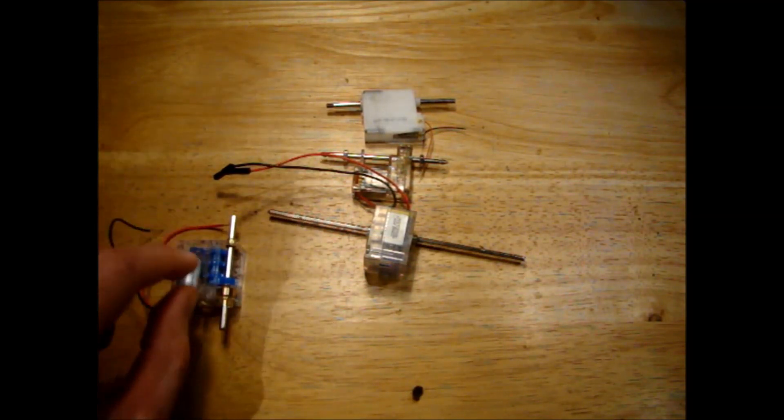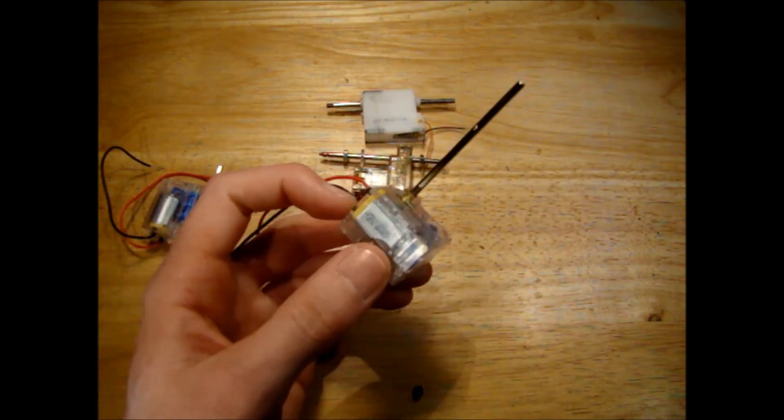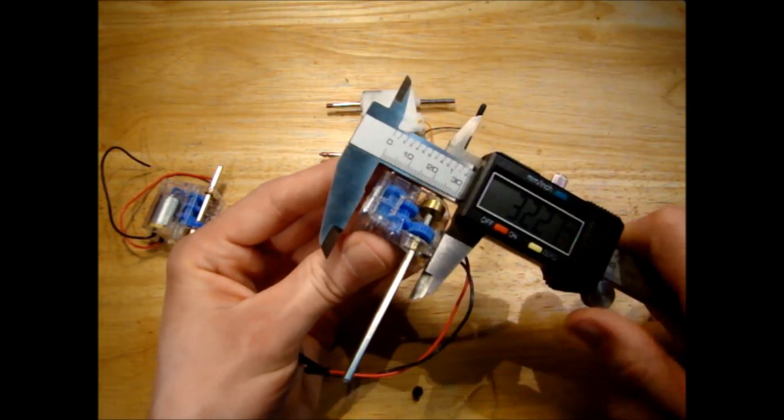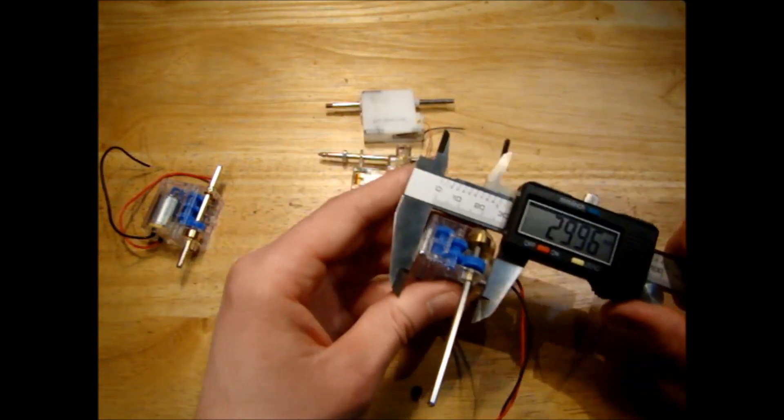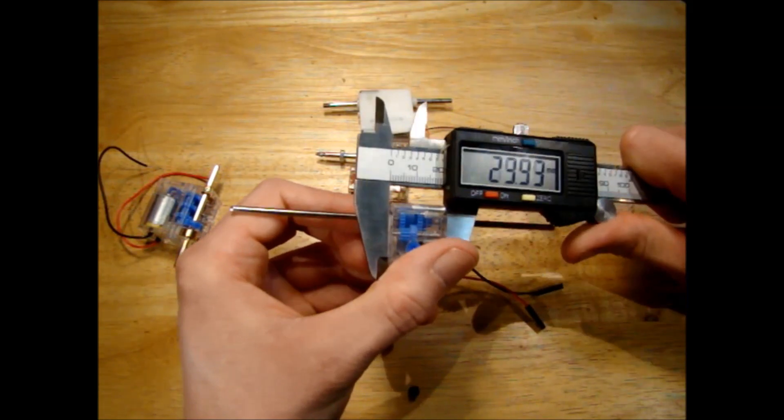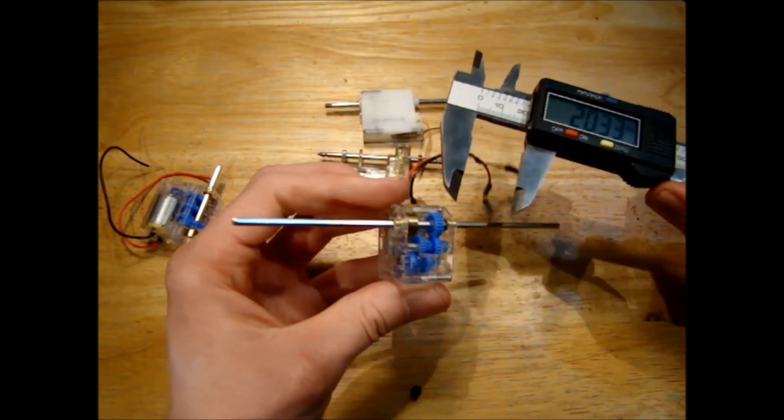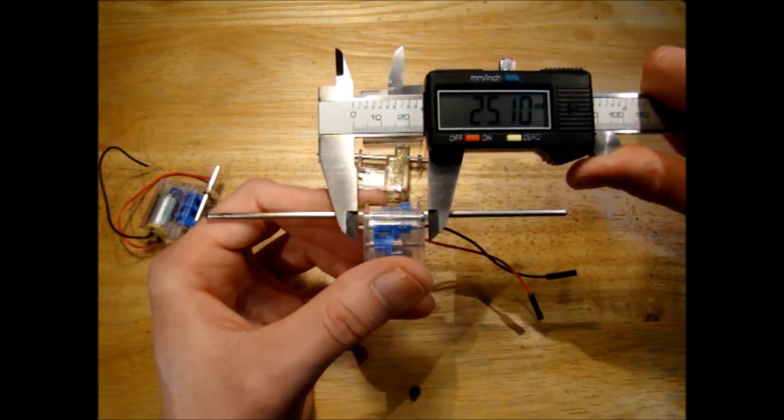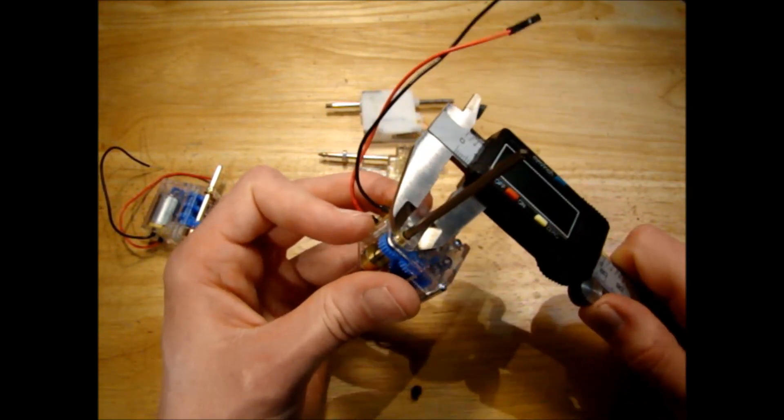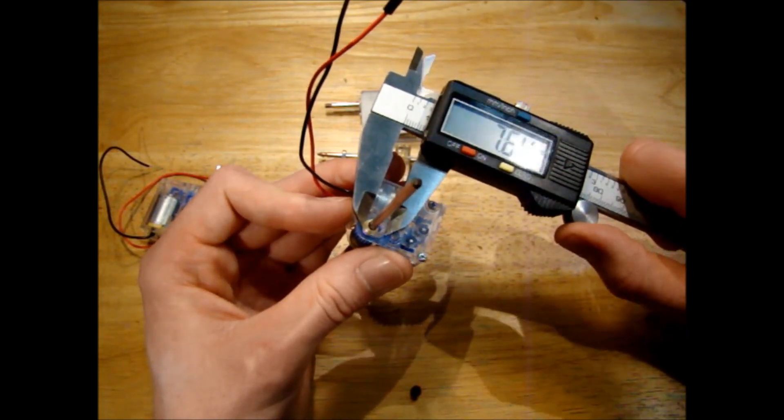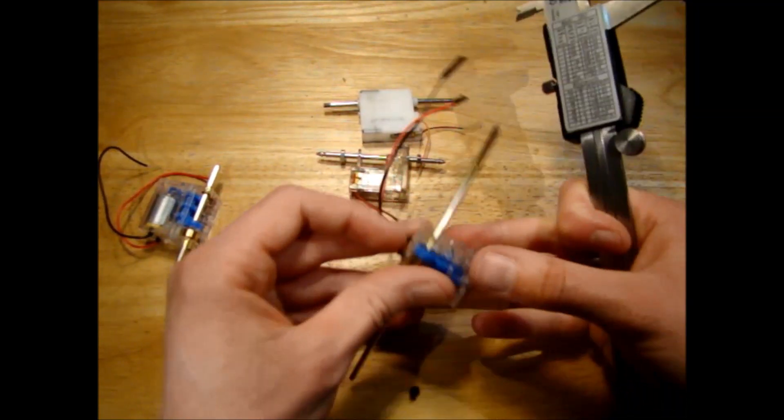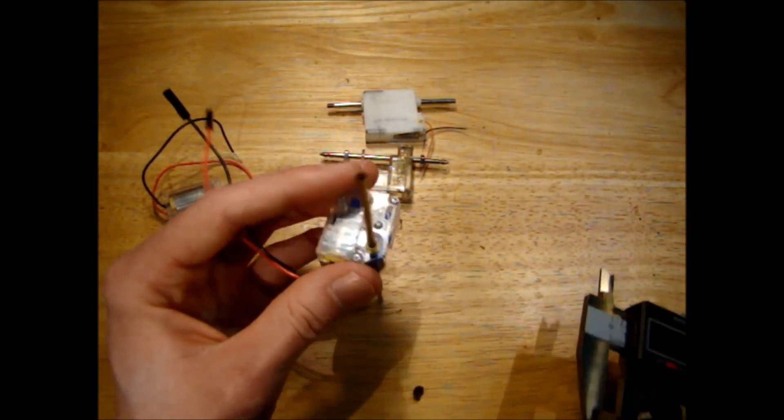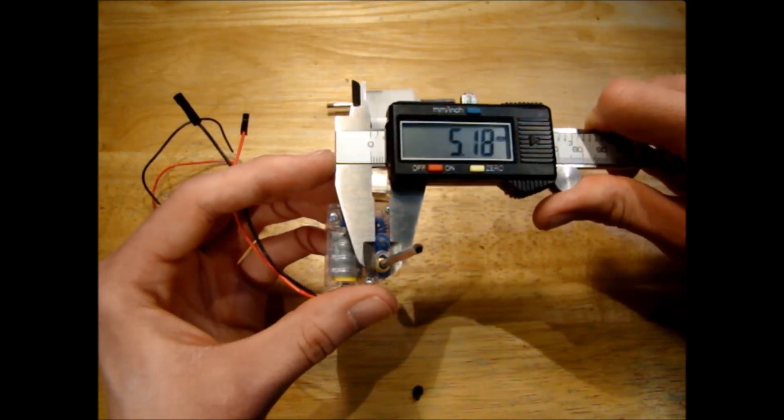The next motor, this is the four-speed Tamiya motor. The length of this one is about 30 millimeters. The width is about 20 millimeters where these pieces stick out for the axle, that's around about 25. This piece that sticks out for the axle is a little bit shorter, probably 5 millimeters.